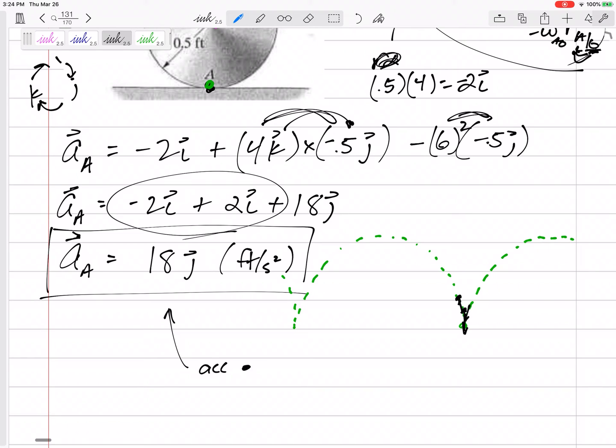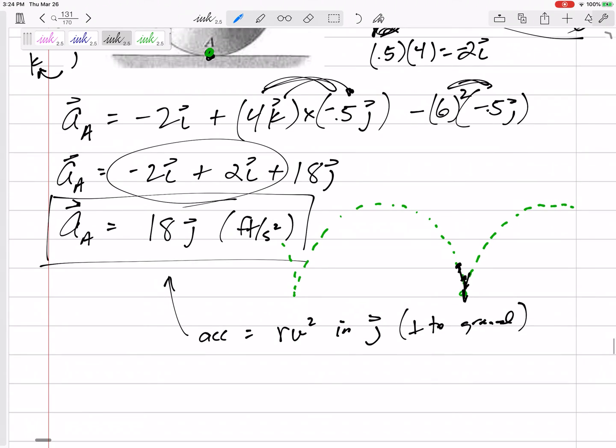So the acceleration, it's not on the edge. I mean, it's at this point where the wheel is touching the ground, the acceleration is equal to r omega squared in the j direction, perpendicular to the ground direction. In the j direction perpendicular to the ground. So the acceleration of point a is r omega squared perpendicular to the ground.